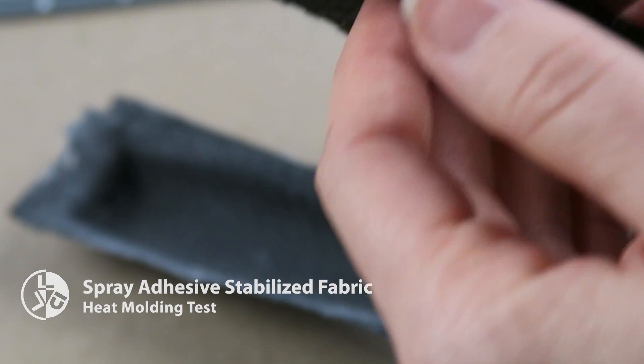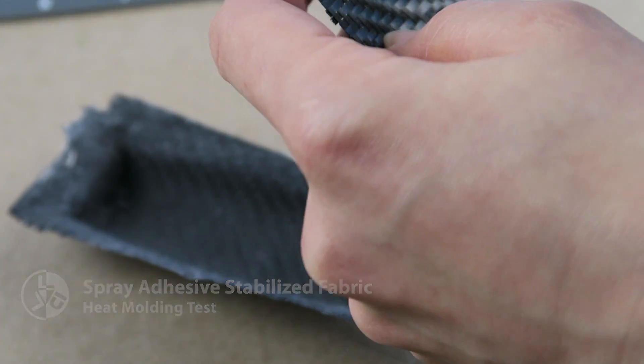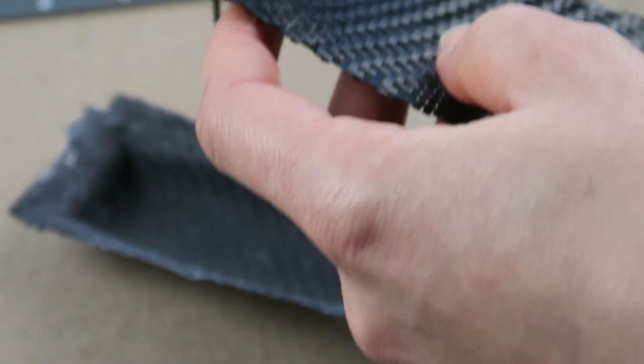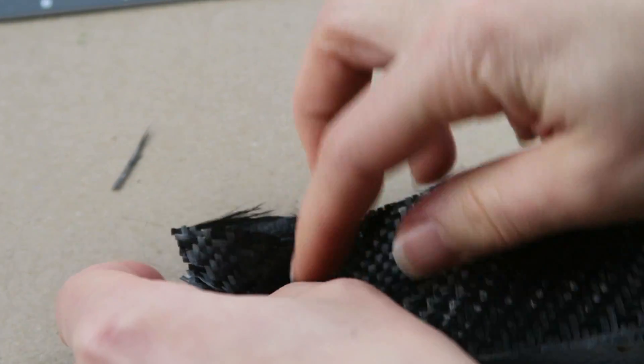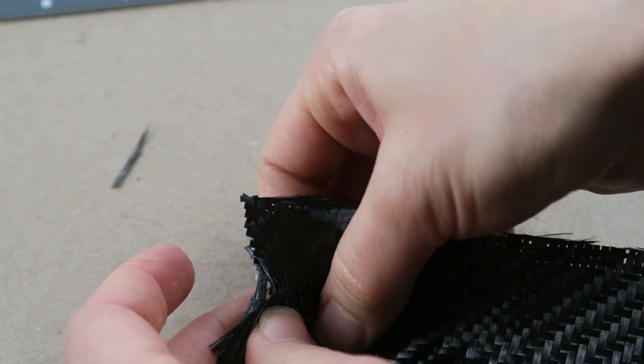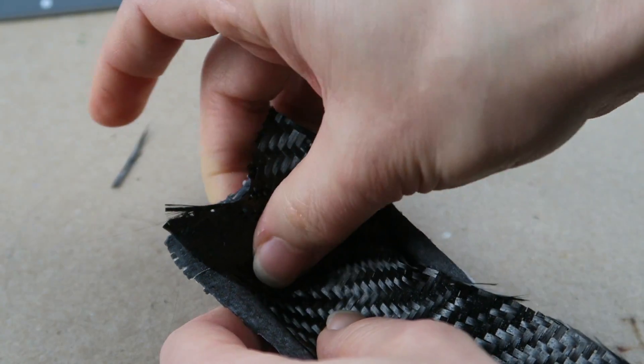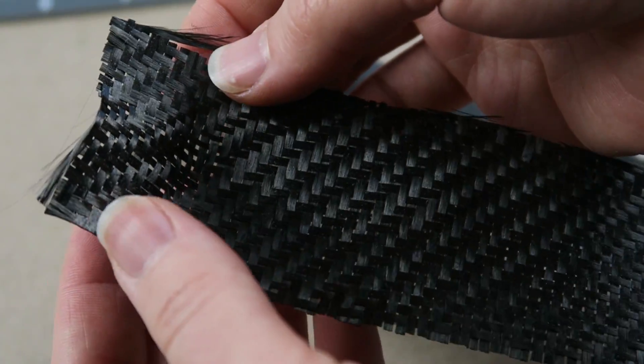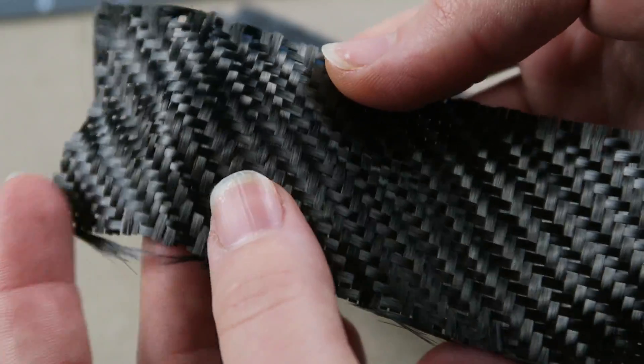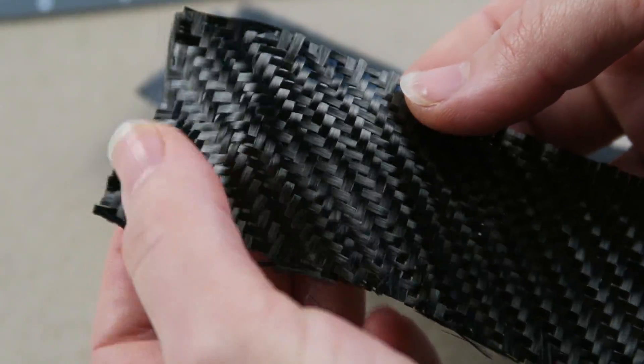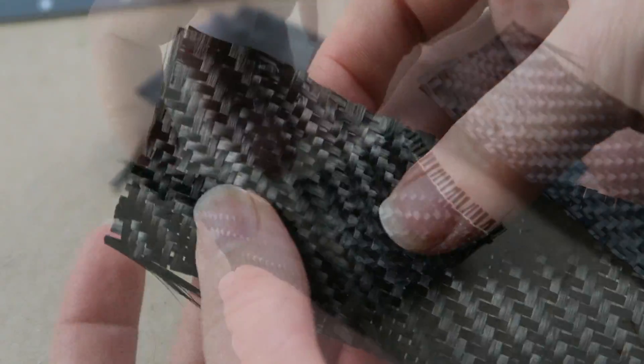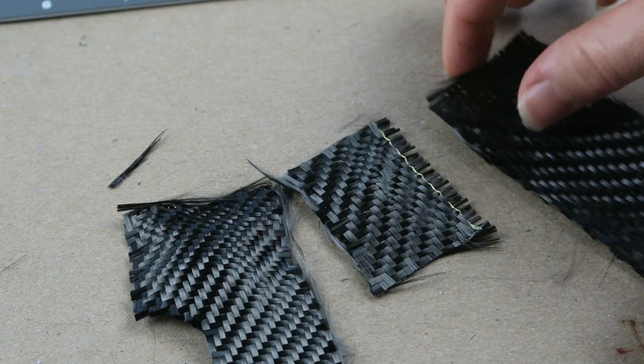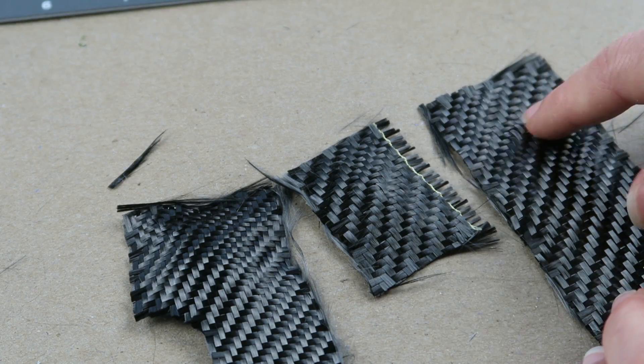And then just for comparison purposes, we're going to try the same thing with the spray adhesive version. Heating it up, pressing it into the mold. It did take the shape somewhat, but this isn't very well held in place. You can flatten this back out fairly easily. But it does hold the shape to some extent. So they all can be somewhat preformed, but the ProFinish provides a more sturdy locking in of that shape.